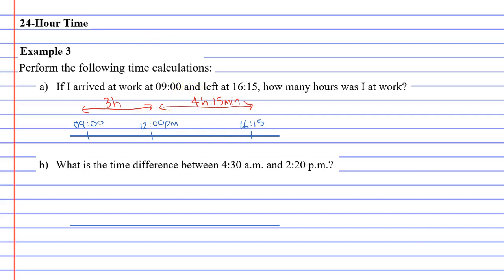And then after looking at that, you can work it out by going, all right, well, three hours plus four hours is seven hours. And then I add my 15 minutes. And that's how long I was at work.